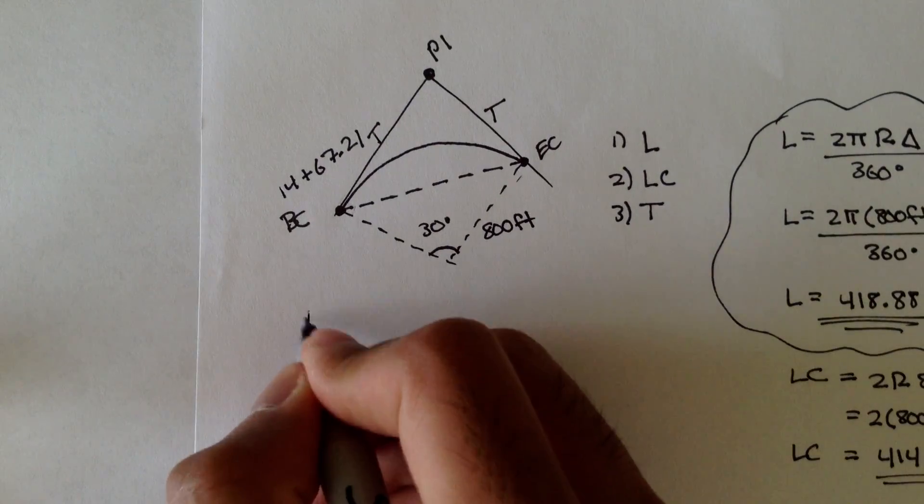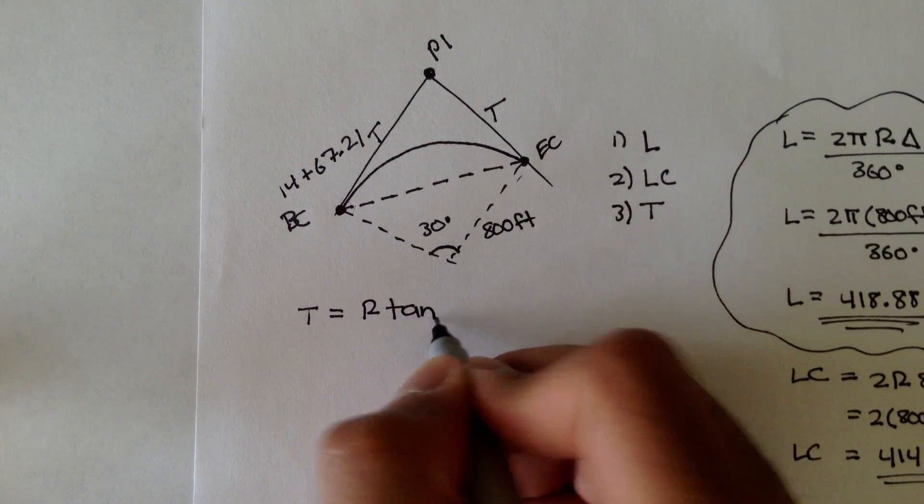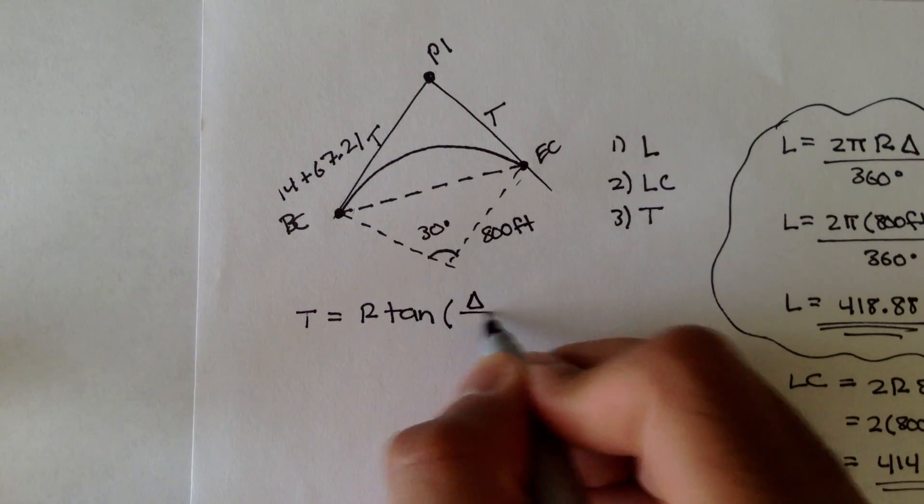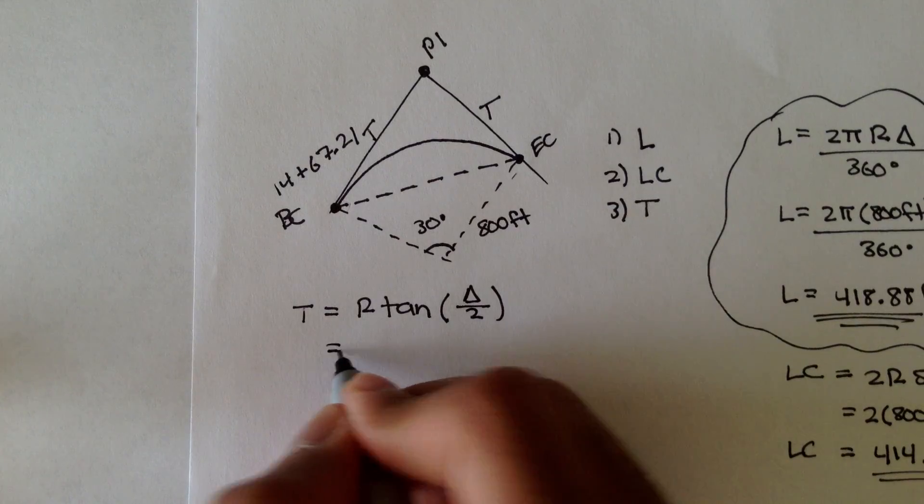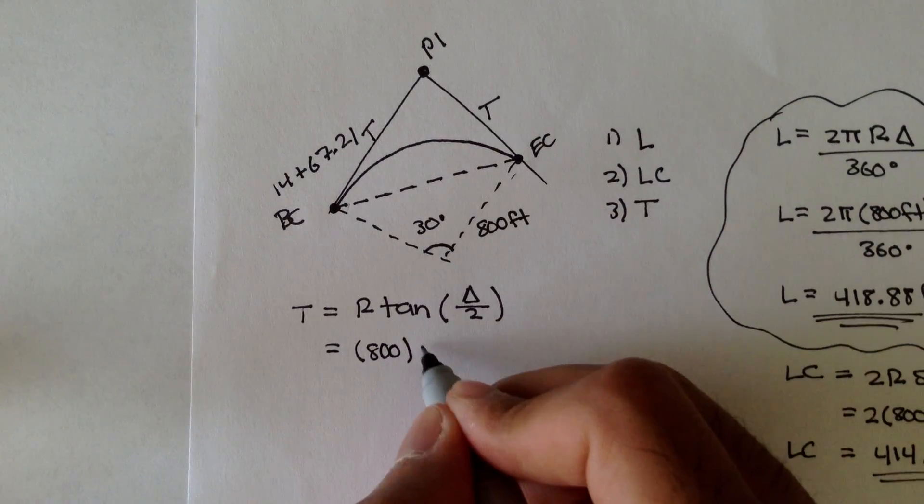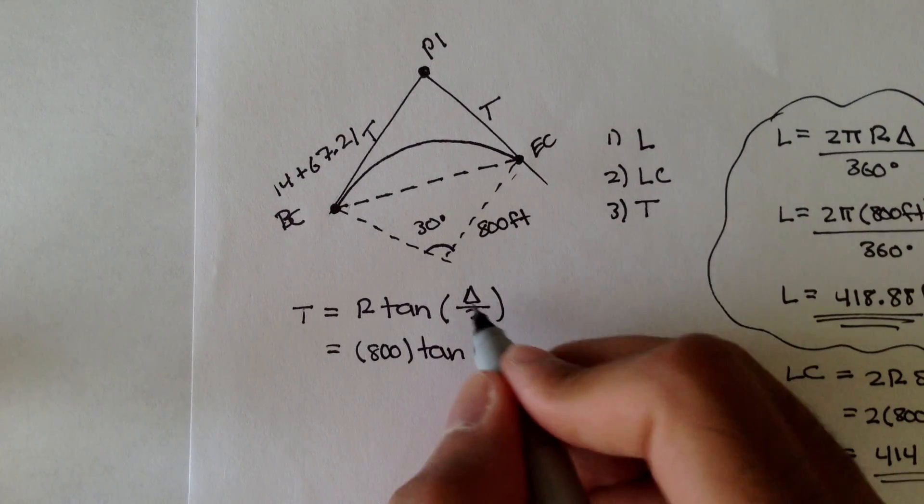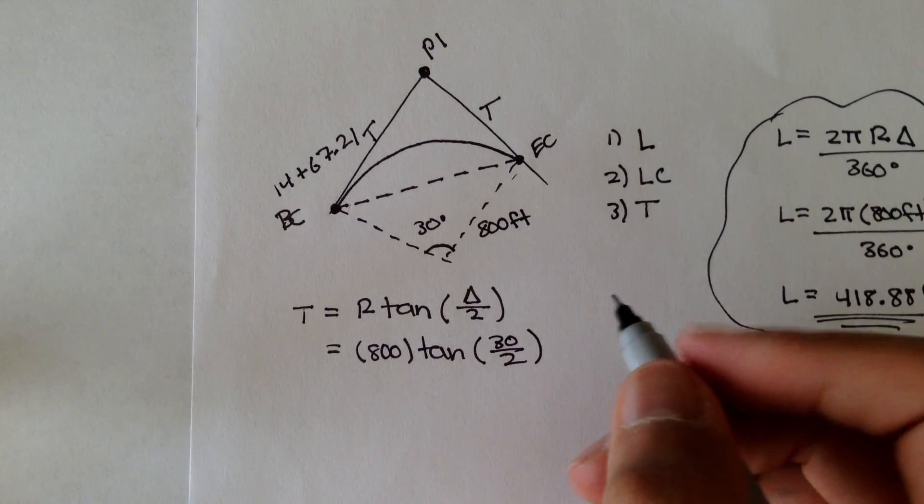Our tangent formula is equal to R tan delta over 2. Remember, delta is your interior angle. So we plug this in. The radius is 800 feet. Tan, or tangent of 30 over 2.